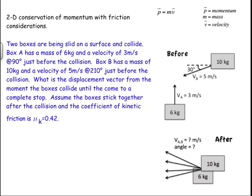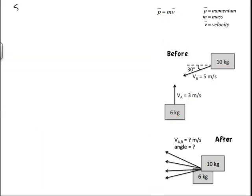I've done some diagramming for us where you can see the initial stages — we have the before picture and the after picture. We're going to use conservation of momentum to initially describe what's going on. I'm given the masses of the objects and their initial velocities before they collide. I can combine all of that information and figure out the overall momentum of my system, which includes both boxes.